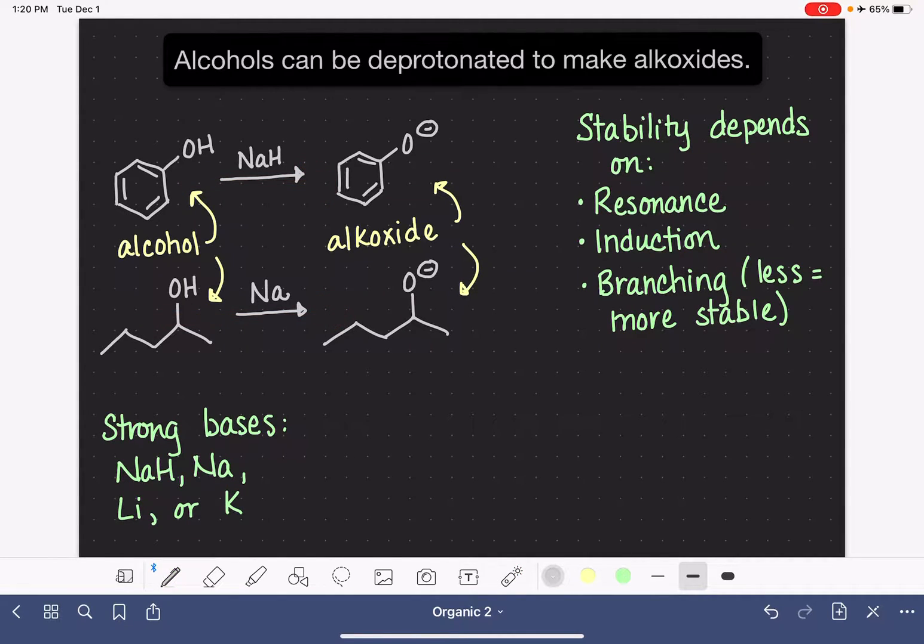Just like anytime we're doing this sort of comparing, the more stable the alkoxide is, that tells us that that alkoxide came from an acidic or reactive or unstable alcohol.